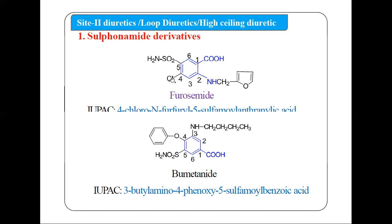Looking alphabetically, C (chloro) is smallest, so: 4-chloro, then at position 2 we have N-furfuryl (written as N-furfuryl because CH₂ is also attached to the furan ring), then 5-sulfamoyl, making this an anthranilic acid derivative. So furosemide is named: 4-chloro-N-furfuryl-5-sulfamoyl anthranilic acid.